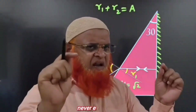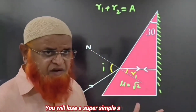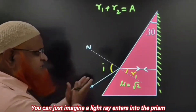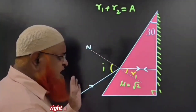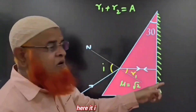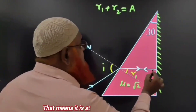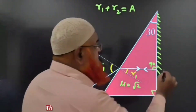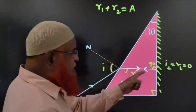My dear friends, never scroll — you will lose a super simple shortcut here. In a prism, imagine a light ray enters into the prism at a right angle, making 90 degrees. It strikes the other end, which is silvered, and retraces back along the same path. That means it is striking exactly at 90 degrees, which means I2 is equal to R2 is equal to zero.